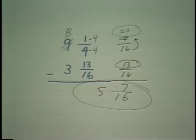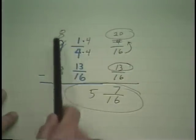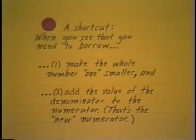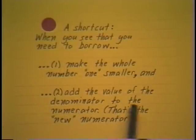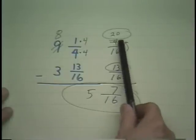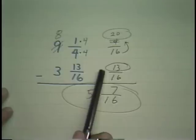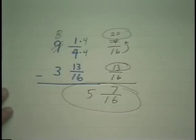Let's review that verbally — a shortcut when you need to borrow. Step 1: make the whole number 1 smaller. Step 2: add the value of the denominator to the numerator, and that gives you the new numerator. So we added the denominator, 16, to the old numerator, 4, to get the new numerator, 20. Now we can subtract, and furthermore we always will be able to. Then reduce and subtract the whole numbers.